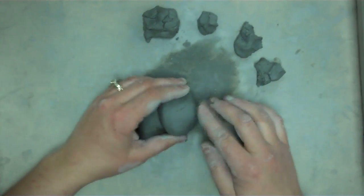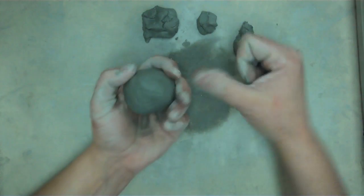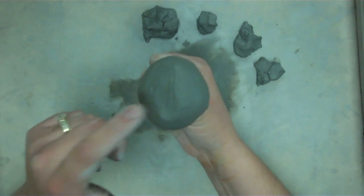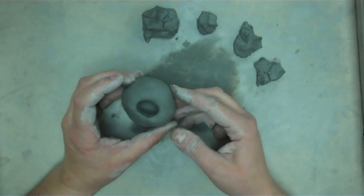And after you get that done, it doesn't have to be perfect, you're going to take your thumb, press it into the middle, but don't go all the way through, and you're going to make a hole into the middle of your clay.